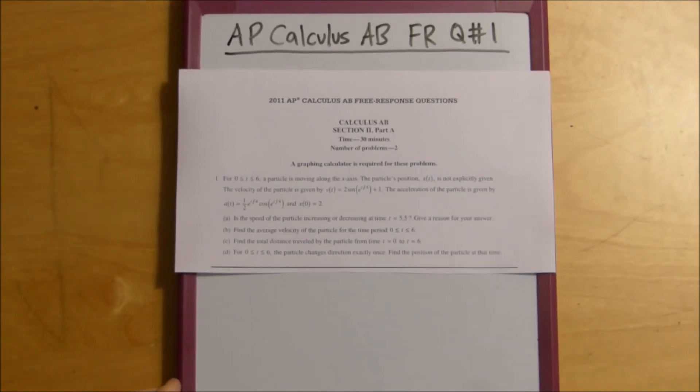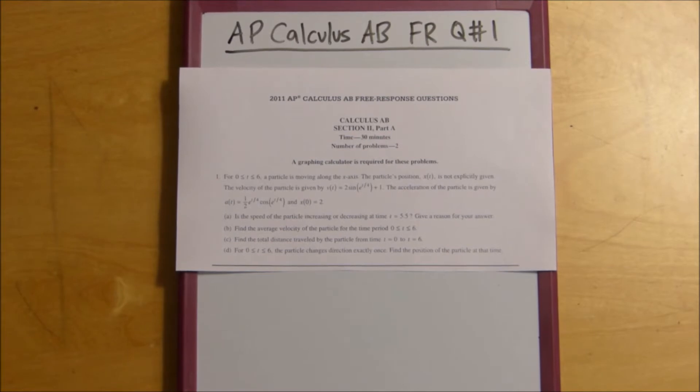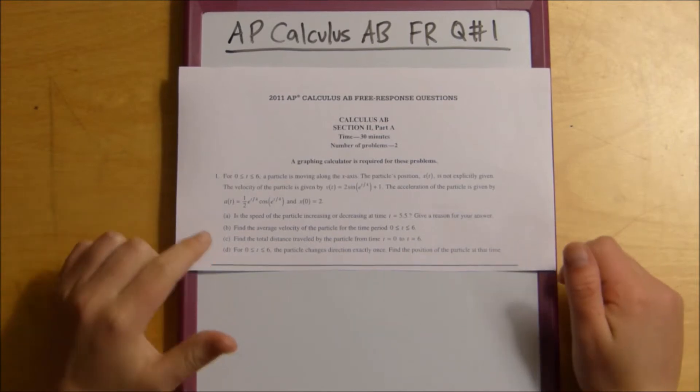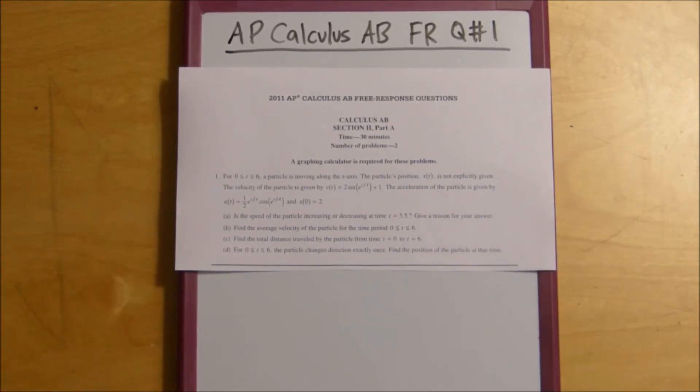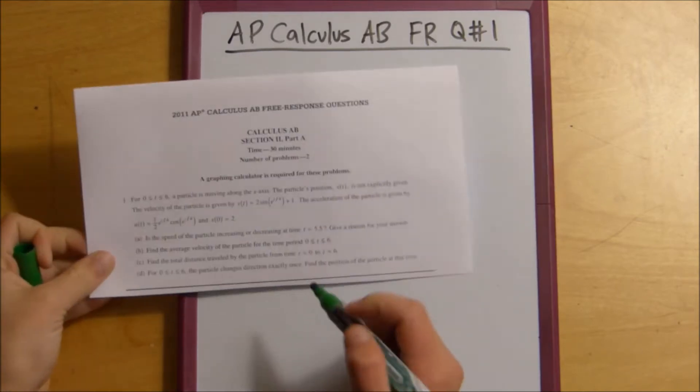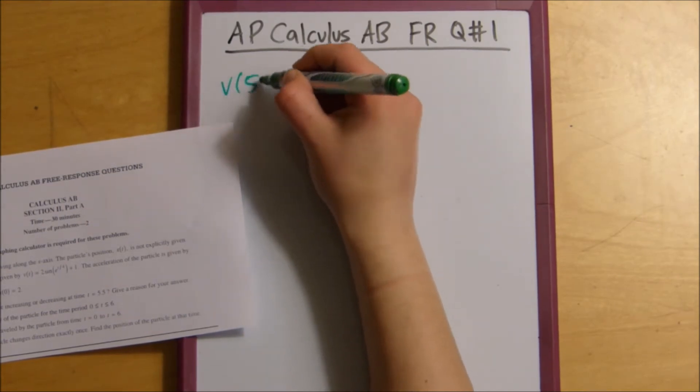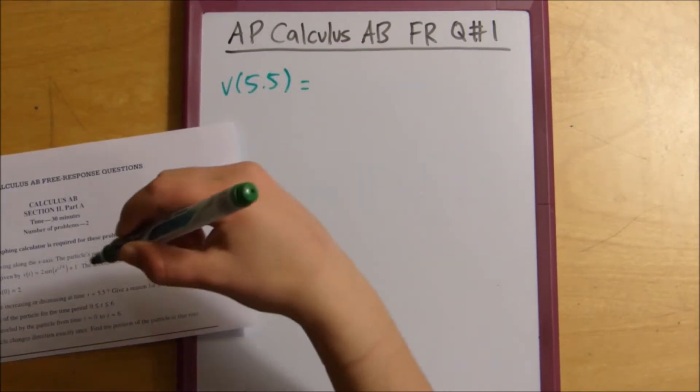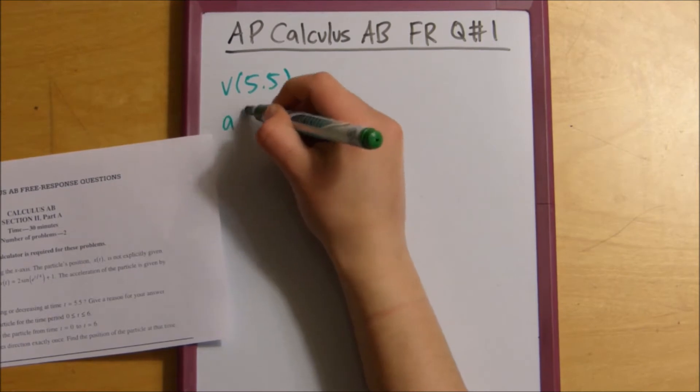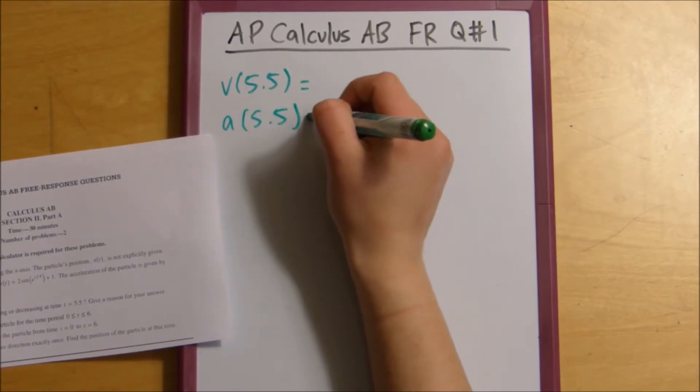Alright, so we've got this particle and it's moving. The first question asks, is the speed of the particle increasing or decreasing at time t equals 5.5? The way you would figure this out is that you would plug in 5.5 into your velocity equation and 5.5 into your acceleration equation.